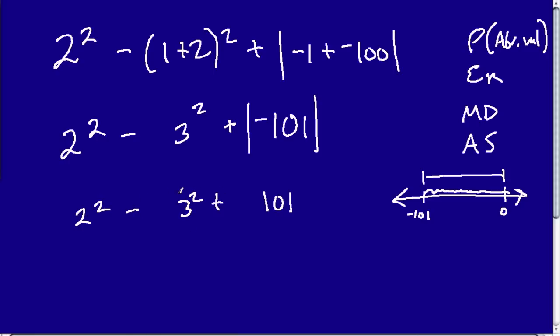So, we have 3 squared plus 101, 2 squared. Now we have subtraction and addition. Go from left to right. So, it's 4 minus 9 plus 101. 2 squared gives us 4. That's 2 times 2. 3 squared is 3 times 3, or 9. And now we go from left to right because we only have inverse operations. So, 4 minus 9 is negative 5 plus 101. I think of this as 101 minus 5, which is 96. And that's our answer.